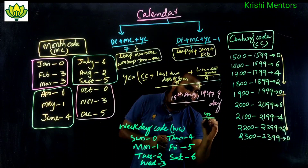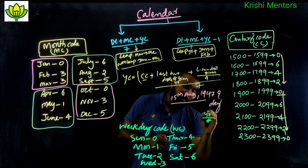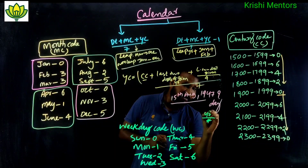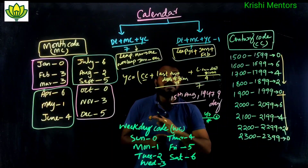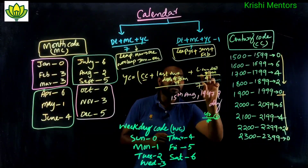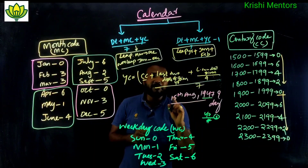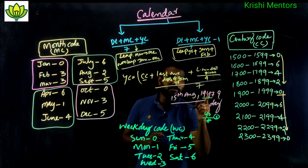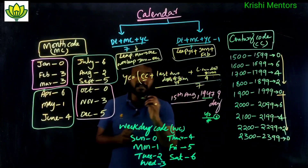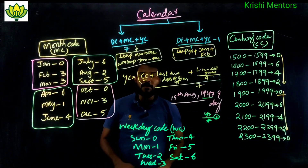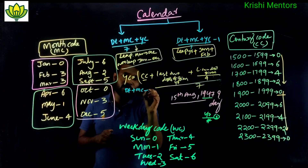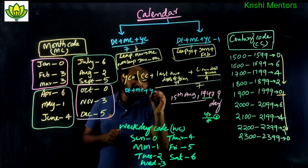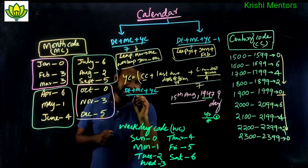47 divided by 4: 4 goes into 47 eleven times with remainder 3. So 1947 is not a leap year. Therefore we use the standard formula: Date plus month code plus year code, divided by 7.